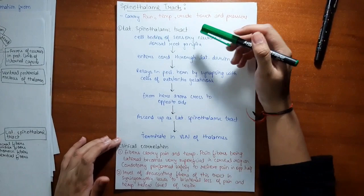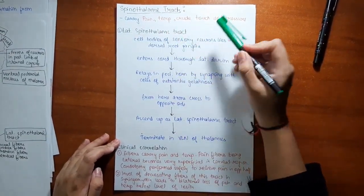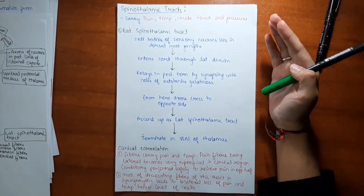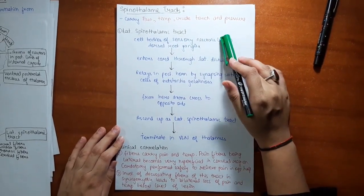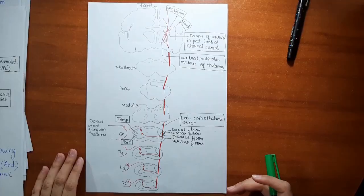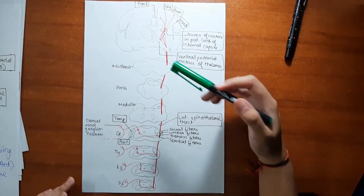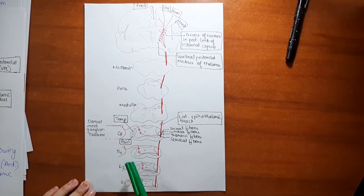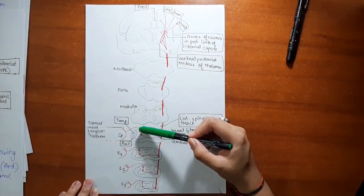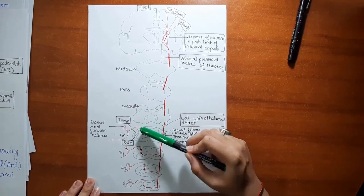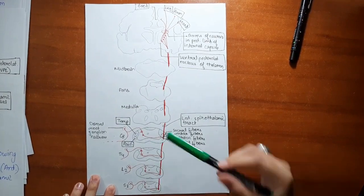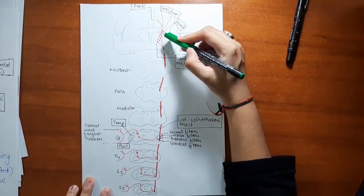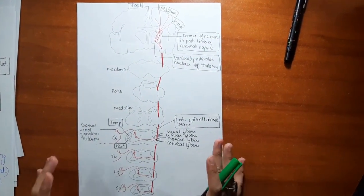Now let's move to the spinothalamic tract. The spinothalamic tract carries pain, temperature, crude touch, and pressure. Crude touch means non-discriminative touch in which a person cannot identify the object being touched. The spinothalamic tract is divided into the lateral and ventral spinothalamic tracts. In this diagram you can see the lateral spinothalamic tract — the cell bodies of sensory neurons lie in the dorsal root ganglia. They enter the cord through the lateral division, synapsing with cells of substantia gelatinosa in the posterior horn. Axons then cross to the opposite side and ascend to the ventral lateral nucleus of the thalamus. The fibers of the lateral spinothalamic tract carry pain and temperature.